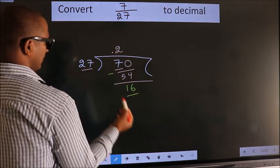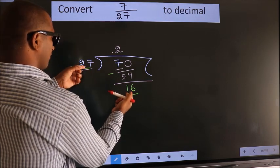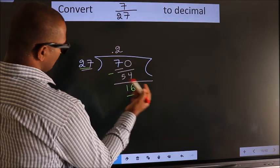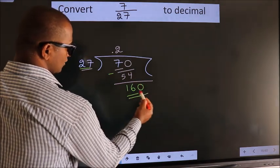Here we have 16, here 27. 16 is smaller than 27. We already have the decimal, so we can directly take 0. So, 160.